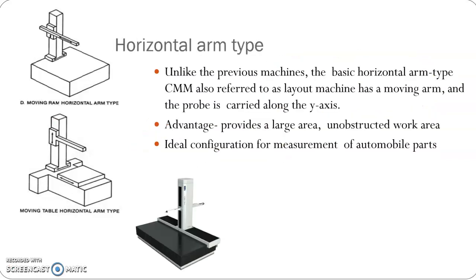The horizontal arm type is also known as a layout machine. It has a moving arm which carries the probe in the Y axis. The X axis is provided by the movement of the column, and the Z axis is the vertical movement of this horizontal arm type. This provides an advantage of a large, unobstructed work area. This is generally used for measurement of automobile parts.